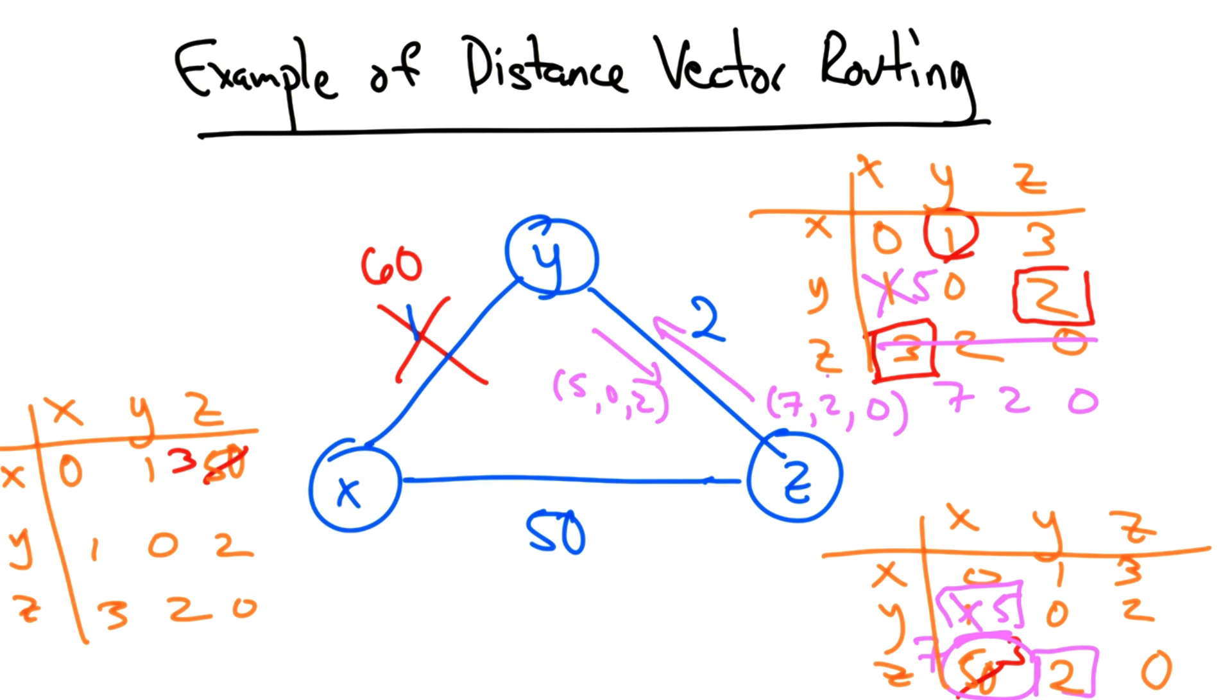y then updates its distance vector for z, and this process continues. So then y thinks it is now 9 units away from x. So z has to do this all over again, and now z thinks that its shortest path is 2 plus 9, or 11.